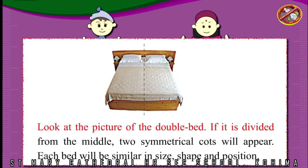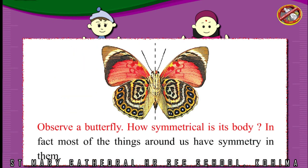Look at the picture of the double bed. If it is divided from the middle, two symmetrical parts will appear. Each bed will be similar in size, shape, and position. Observe a butterfly. How symmetrical is its body? In fact, most of the things around us have symmetry in them.